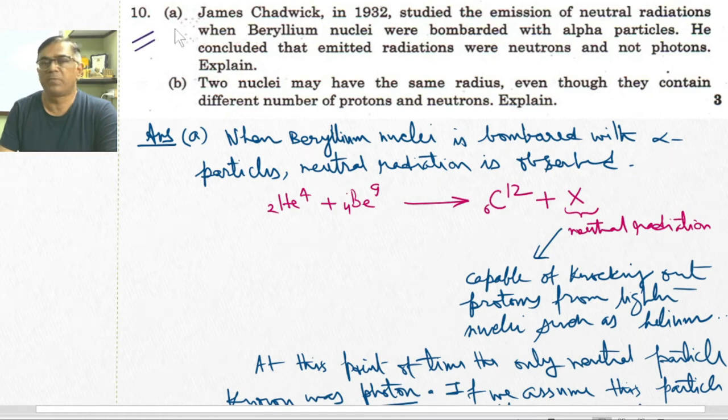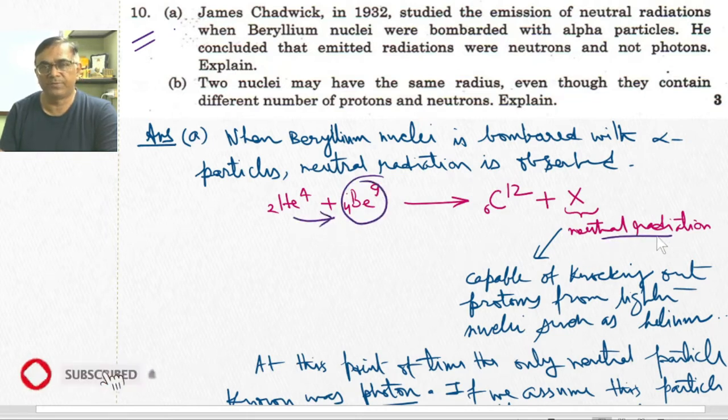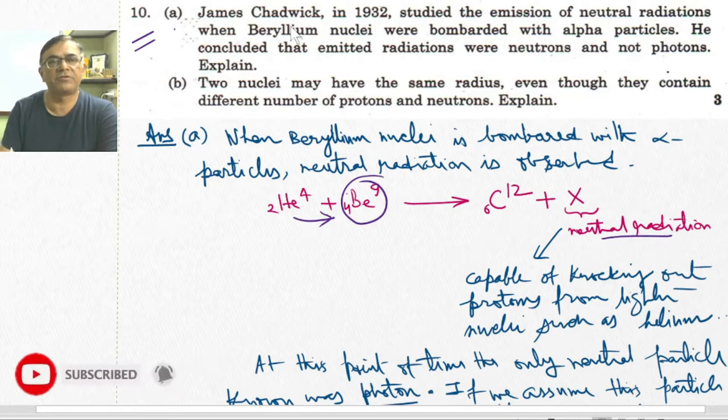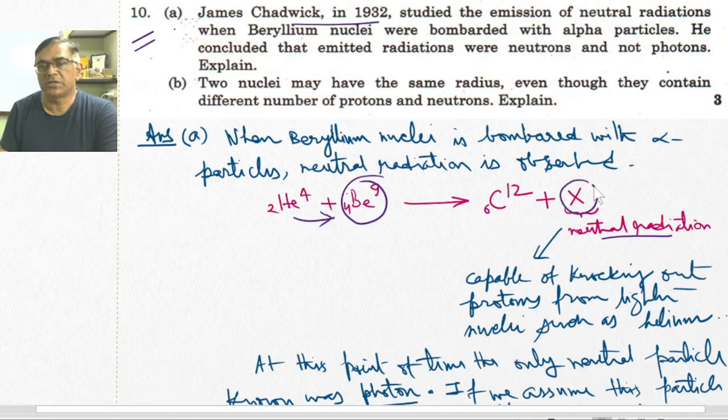Now answer to question number 10, part A. When beryllium is bombarded by alpha particles, neutral radiation is observed. This was studied by Chadwick in 1932, and this neutral radiation was capable of knocking out protons from lighter nuclei such as helium, nitrogen, and carbon.